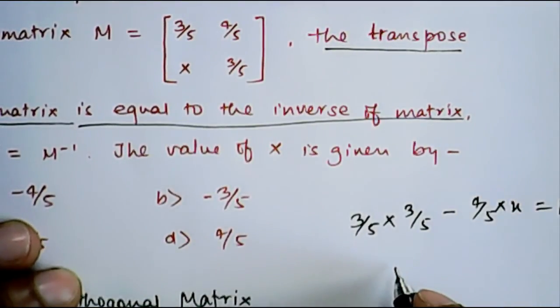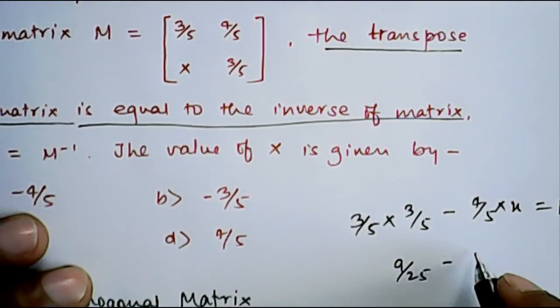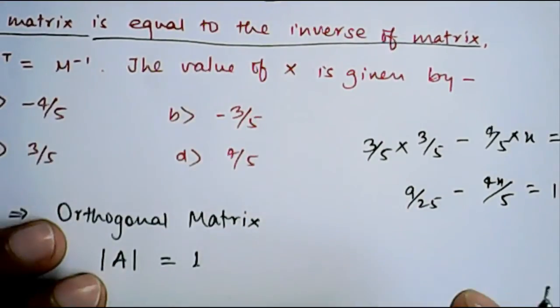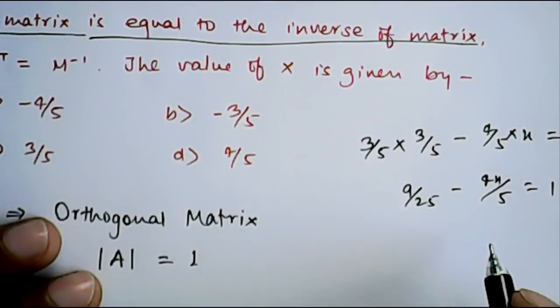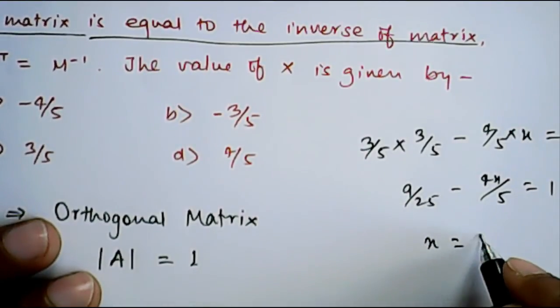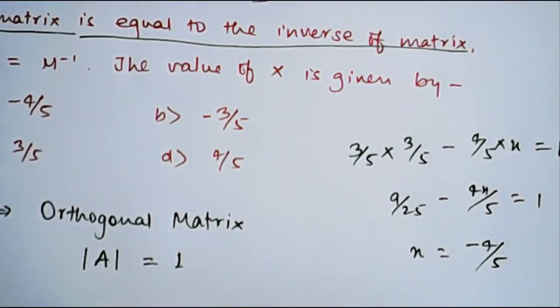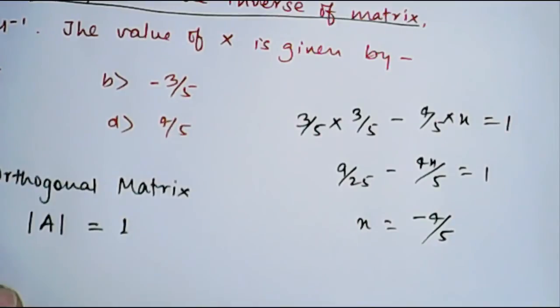So this will become 9 by 25 minus 4x by 5 equal to 1. Now by solving this you can get x equal to minus 4 by 5.